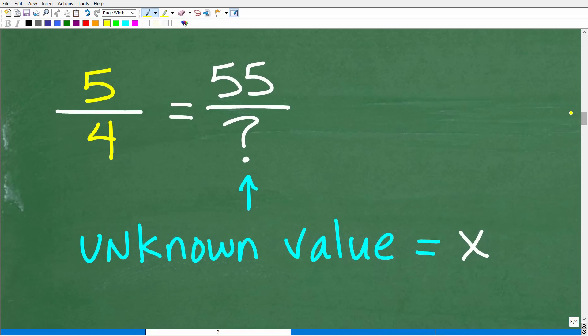All right, so here we have 5 over 4 is equal to 55 over this question mark. Now, in this particular problem, the way I kind of wrote this right here, I have a question mark, okay? Now, why do I bring that up? Well, because some of you might be a little bit confused with this symbol, okay? But what is this question mark? Well, this question mark is representing some unknown value, right? Like, hey, what's the number down here? Well, really, this is an algebra problem.